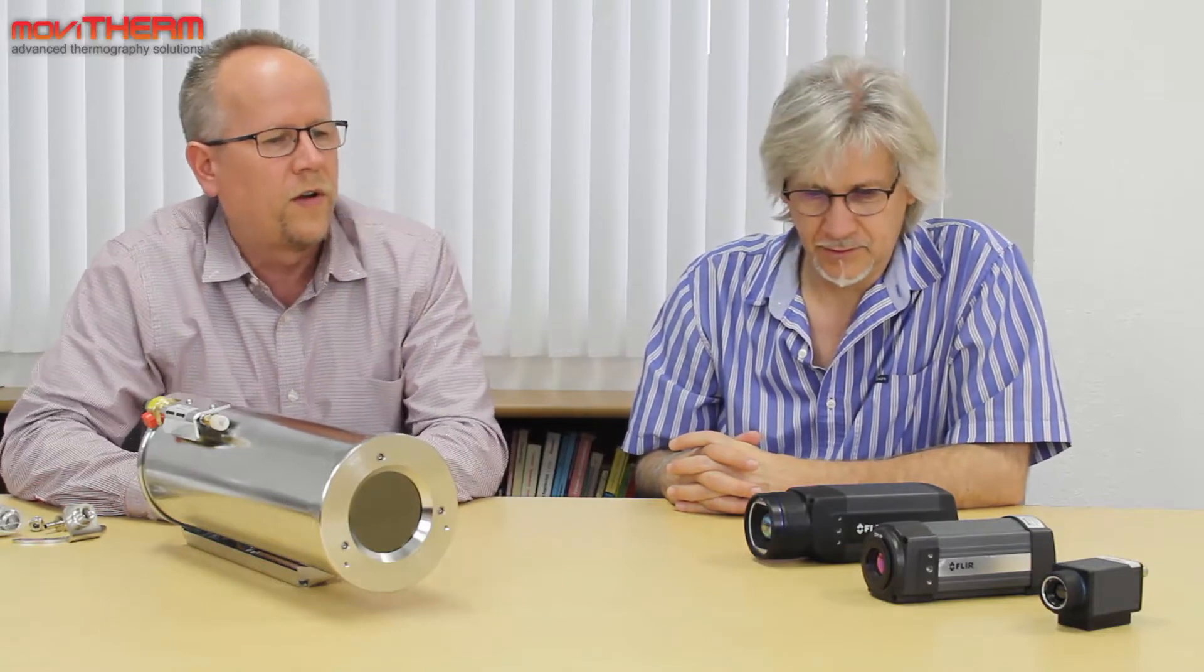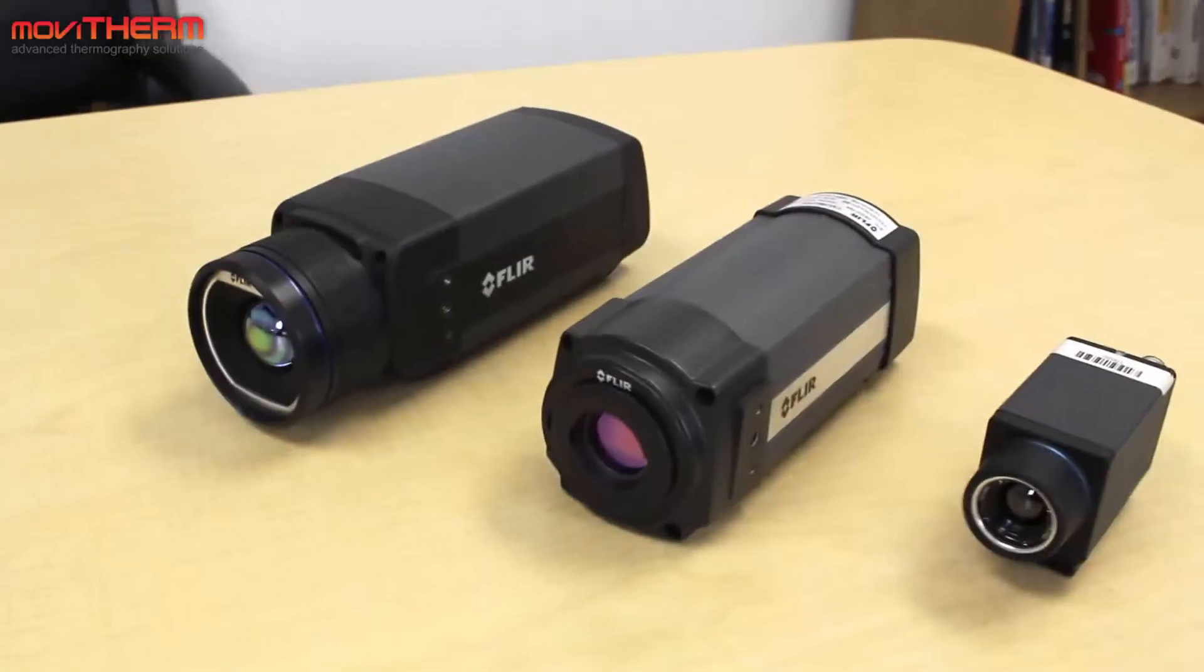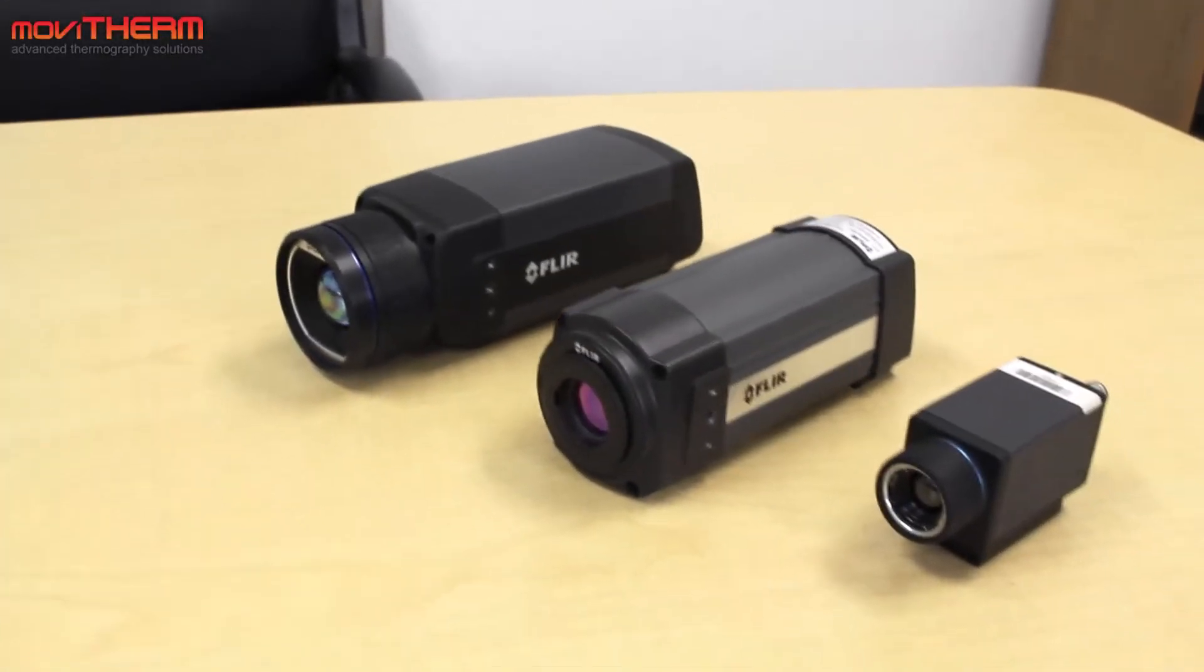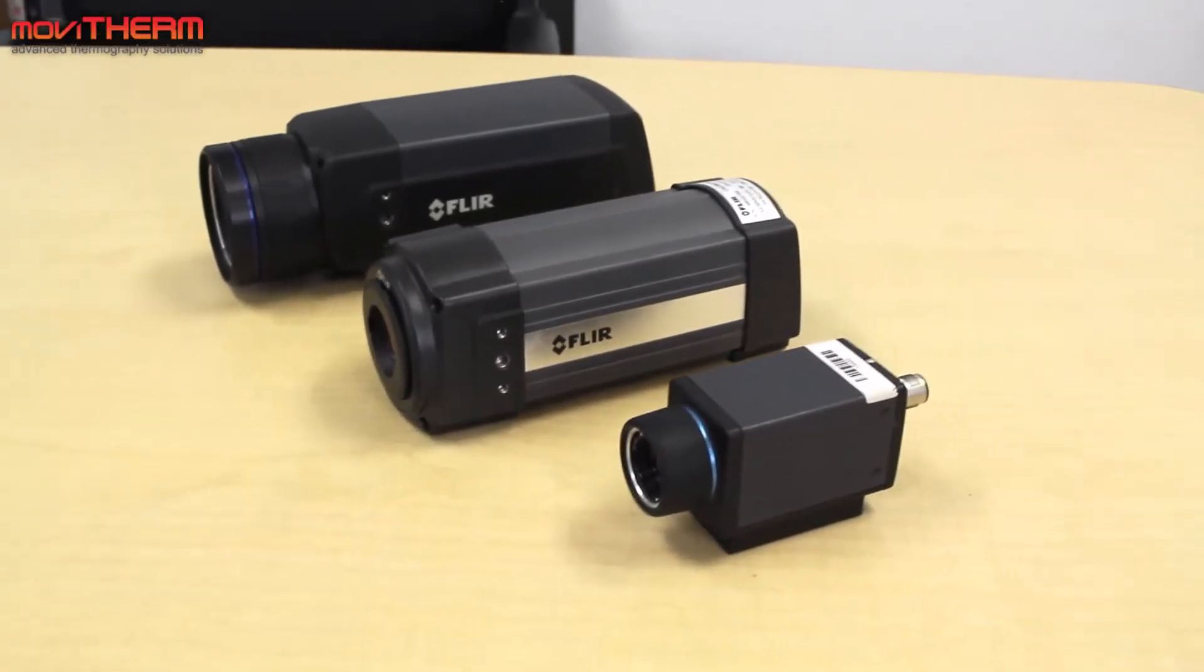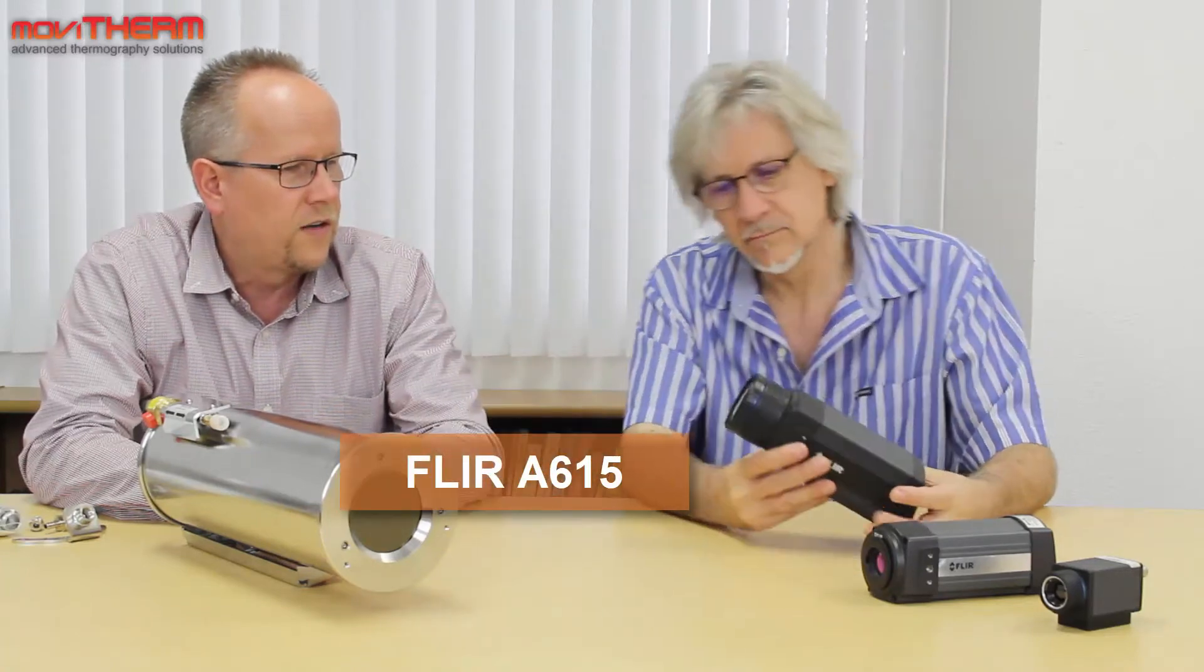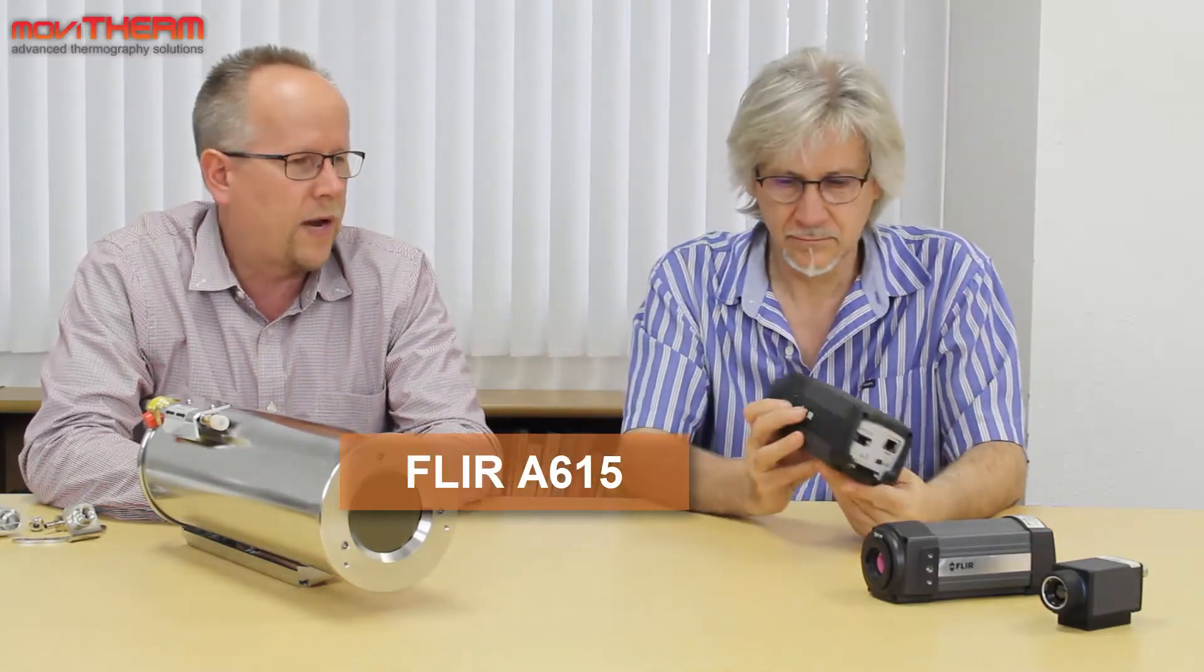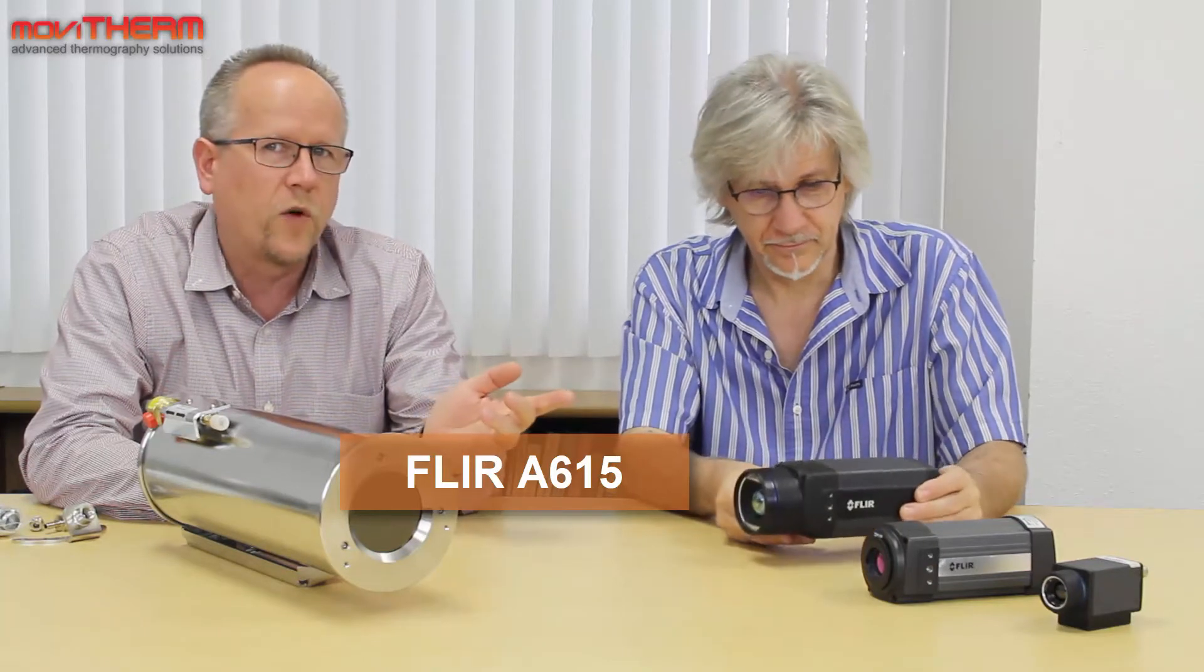The most commonly used thermal cameras from FLIR that go into these enclosures are these micro bolometer type cameras we call them fixed mount cameras with an ethernet connection on the back. We have the a615 here, our flagship camera, about a $20,000 camera with 640 by 480 pixel resolution.